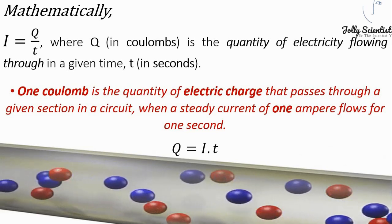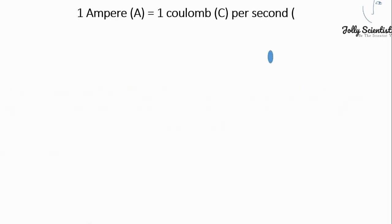Mathematically, Q equals I times t. One ampere equals one coulomb per second.